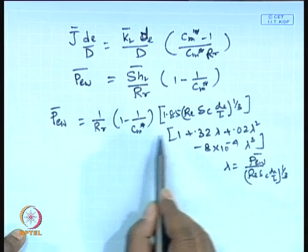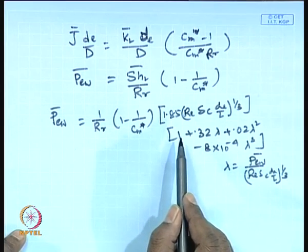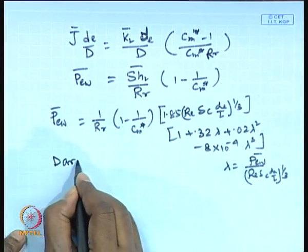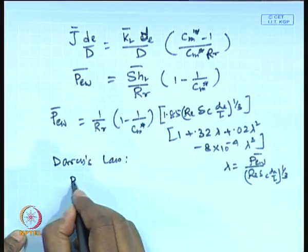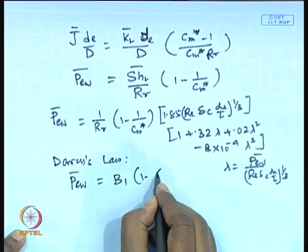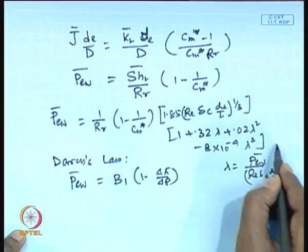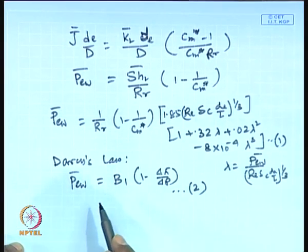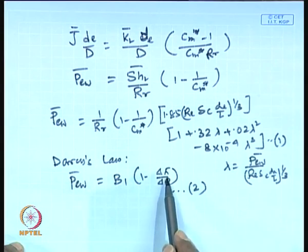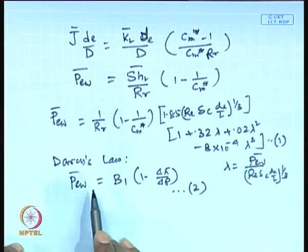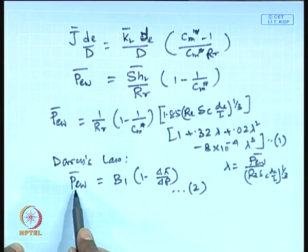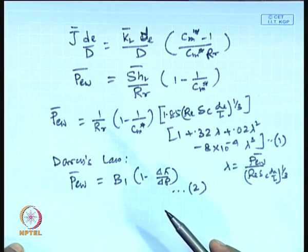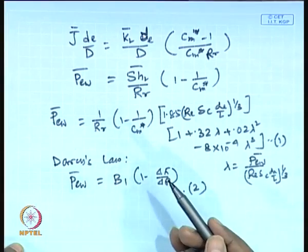This gives an algebraic relationship between c_m* and P_ew with two unknowns. Combined with Darcy's law — valid throughout the whole module — P_ew = B₁(1 − Δπ/ΔP), where Δπ is a function of c_m*, we get two algebraic equations and two unknowns: P_ew-bar and c_m*. These can be solved using an iterative technique or a non-linear algebraic equation solver.